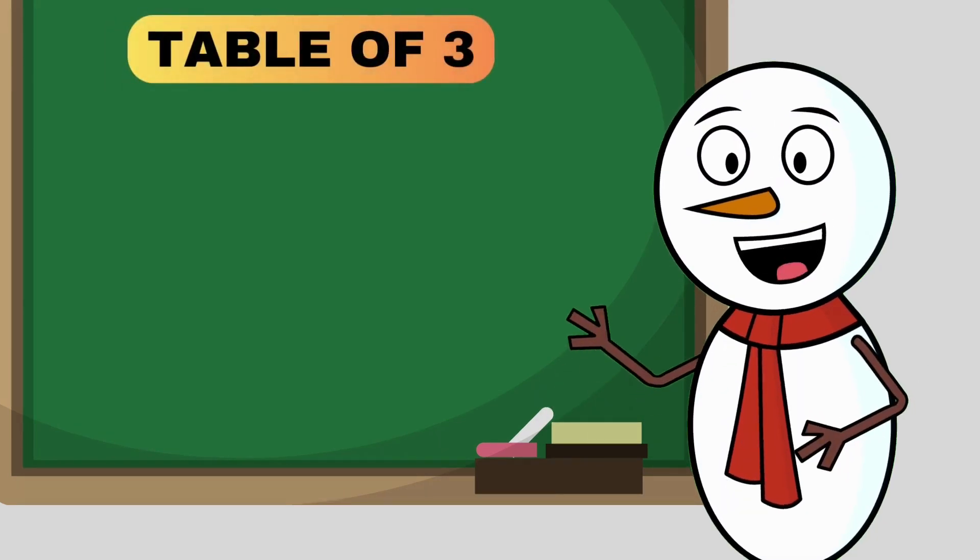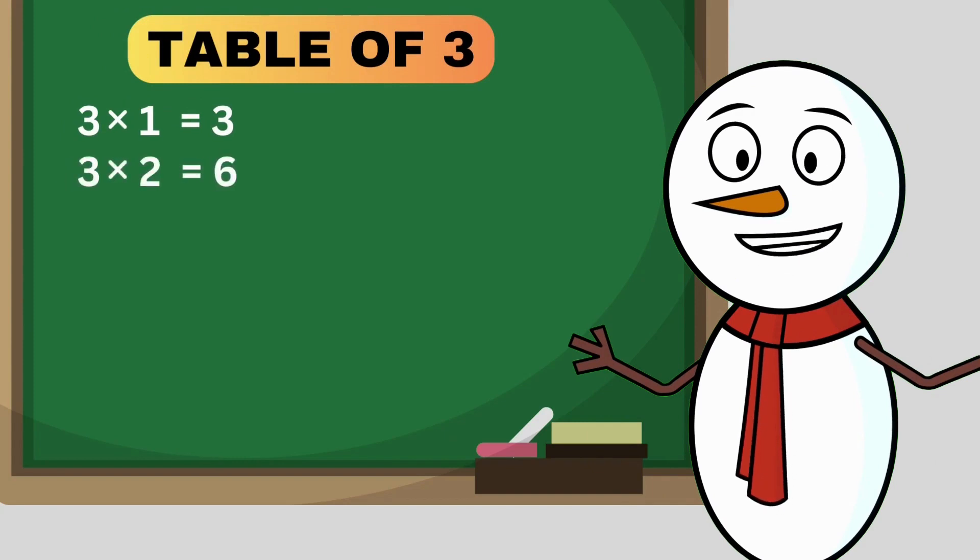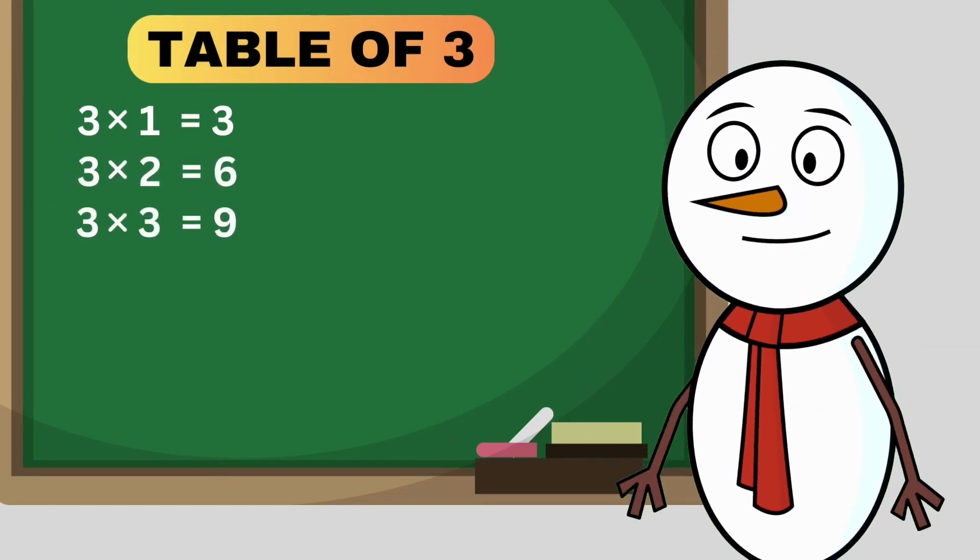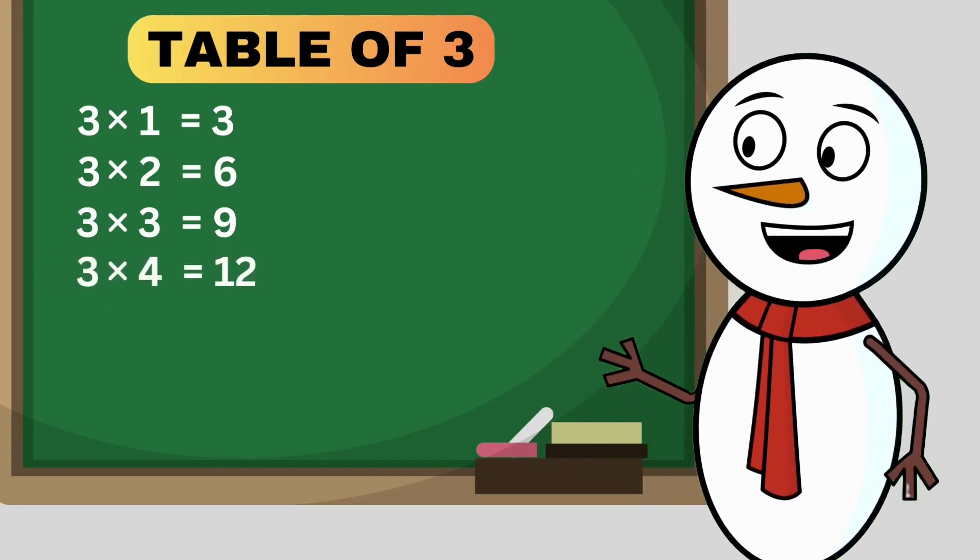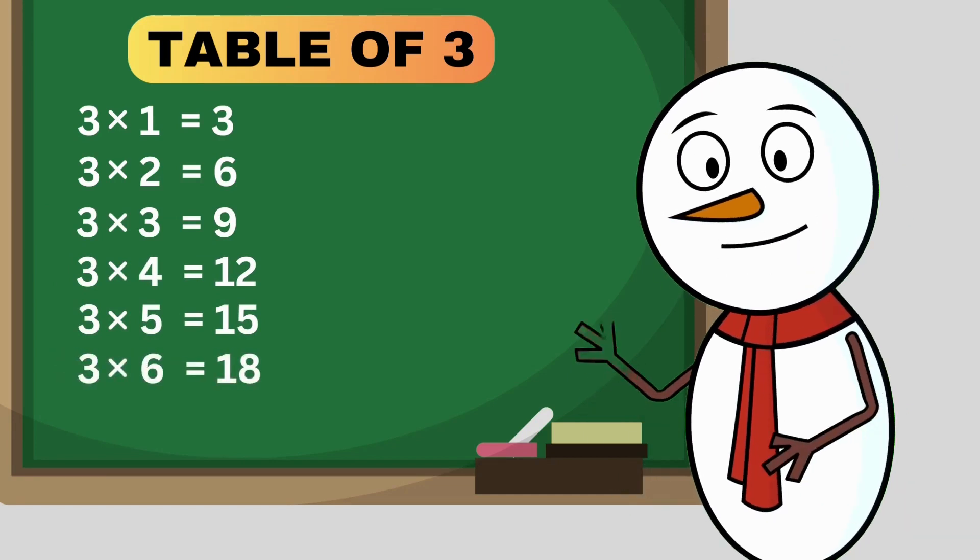Table of 3. 3 times 1 is 3. 3 times 2 is 6. 3 times 3 is 9. 3 times 4 is 12. 3 times 5 is 15. 3 times 6 is 18.